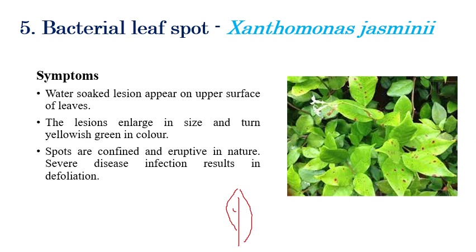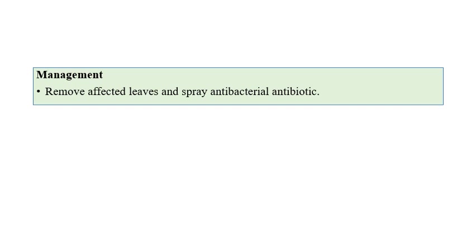Bacterial leaf spot is caused by Xanthomonas jasmini. Small water-soaked lesions appear on the upper surface of leaves. In later stages, these lesions enlarge and yellowing of leaves occurs. The lesions are light brown to black water-soaked spots on the upper surface. In severe stages, defoliation and death of plants occurs. Removal of infected plants and applying antibiotics can be recommended.